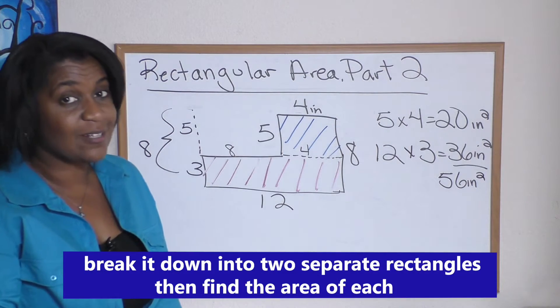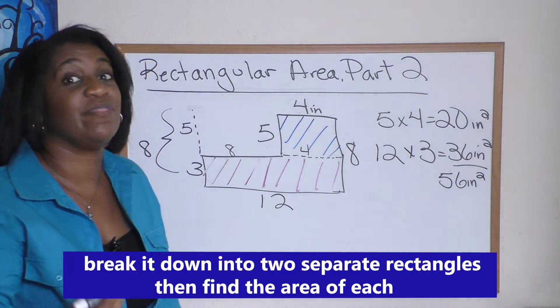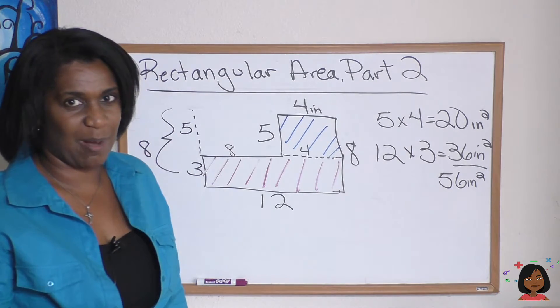Now let's just add them together for the total area, which is going to be 56 inches squared. That's really it. Break it down to two separate rectangles and then do your length times width. Let's try another problem.